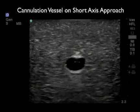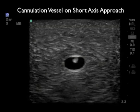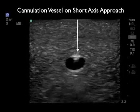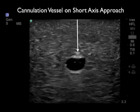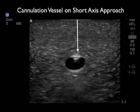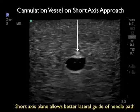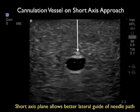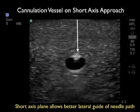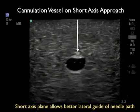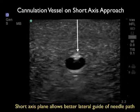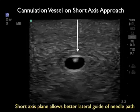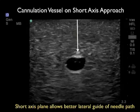In this video clip we'll watch cannulation of a vessel using the short axis approach on a phantom simulating the human body. With the probe in short axis orientation, the vessel appears as a circle end-on. We can see the echogenic tip of the needle coming down to the vessel, permeating the anterior wall, and then entering into the lumen. The short axis plane allows better lateral guidance of the needle path and is a good starting position for cannulation of the axillary vein.